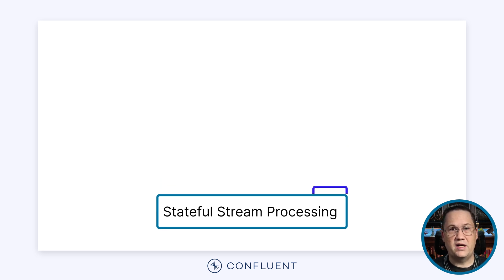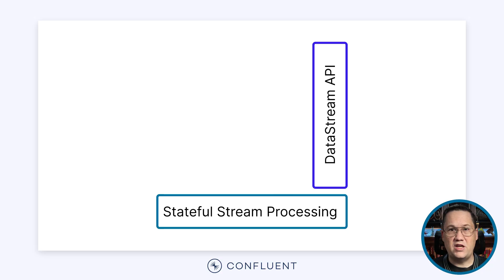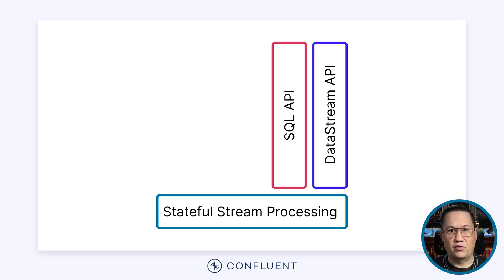Originally, this was all done using the DataStream API for Flink. It allows you to write stateful functions that operate on individual events and connect them into rich pipelines. However, while the DataStream API is powerful, it isn't very approachable. But what if we flip things around and treated a stream of events like a database table? Could we allow developers to use the same tools to access a data stream as they use to read a database? This is the origin of the SQL API for Flink.